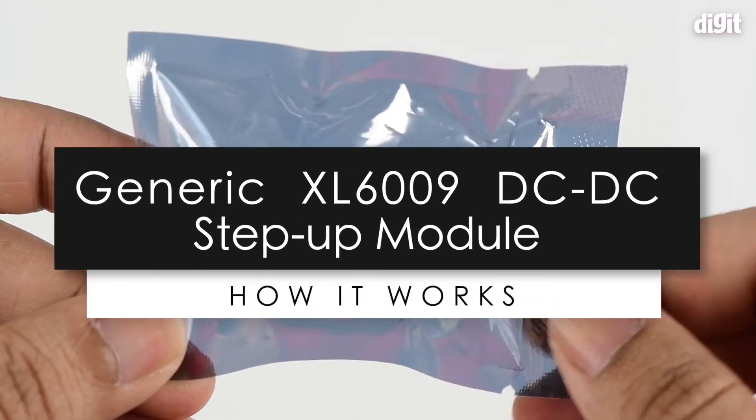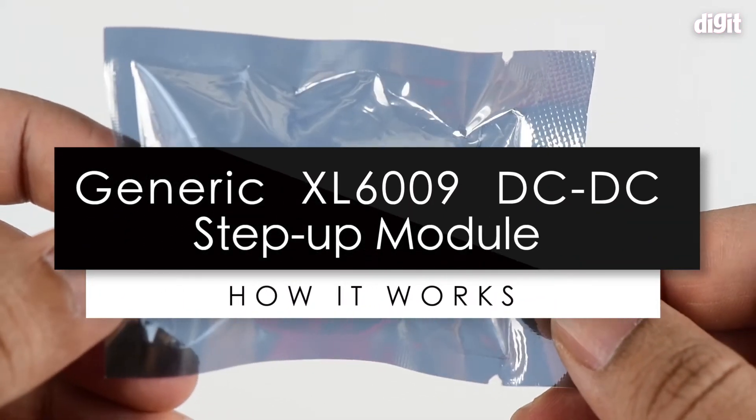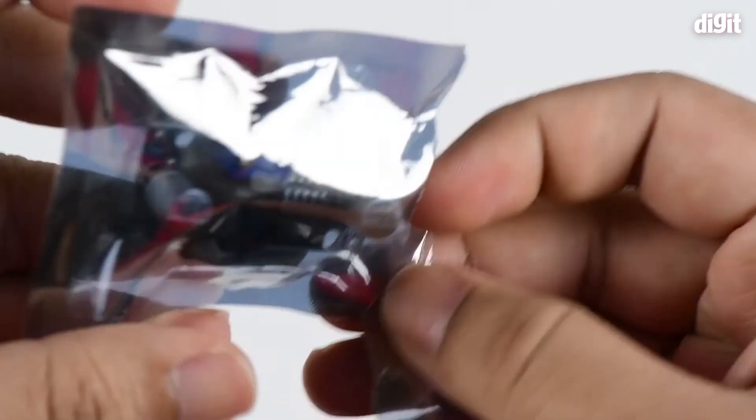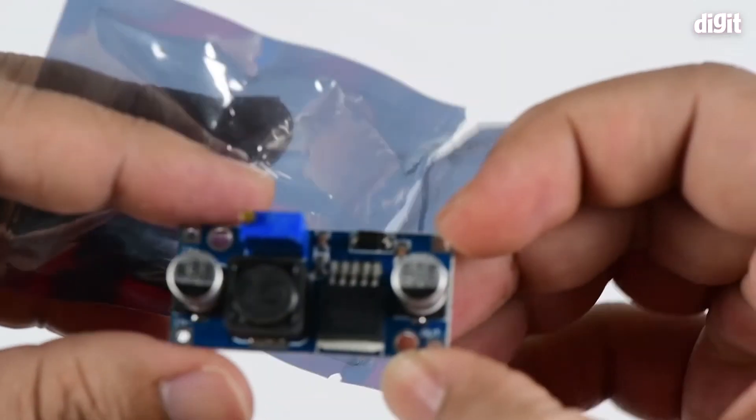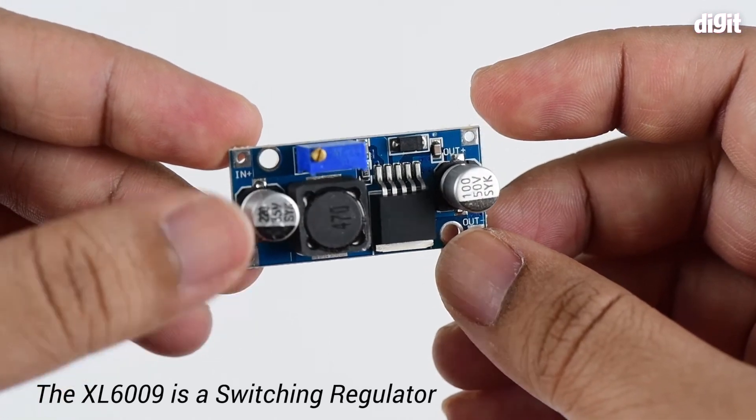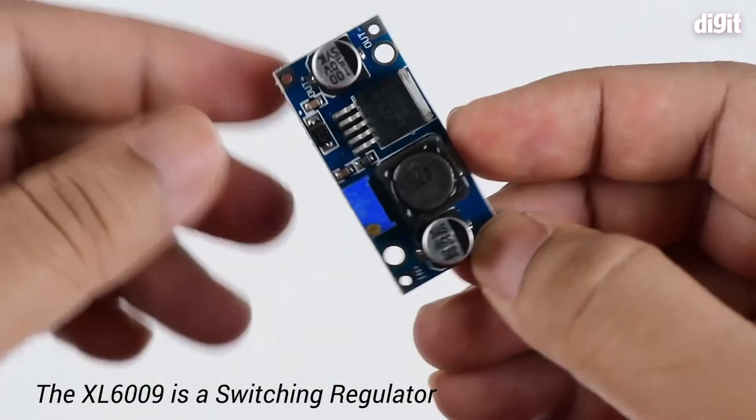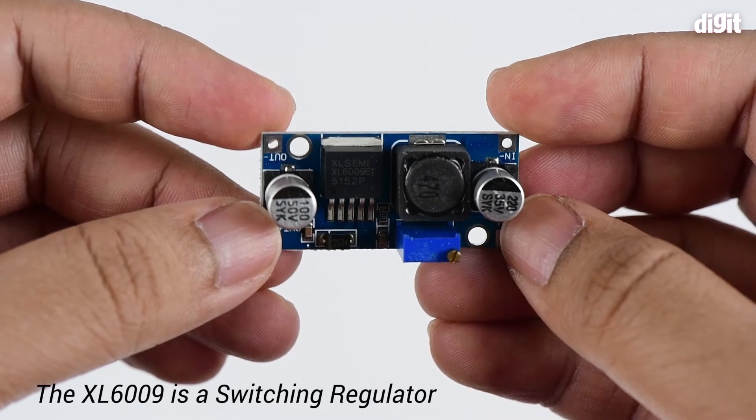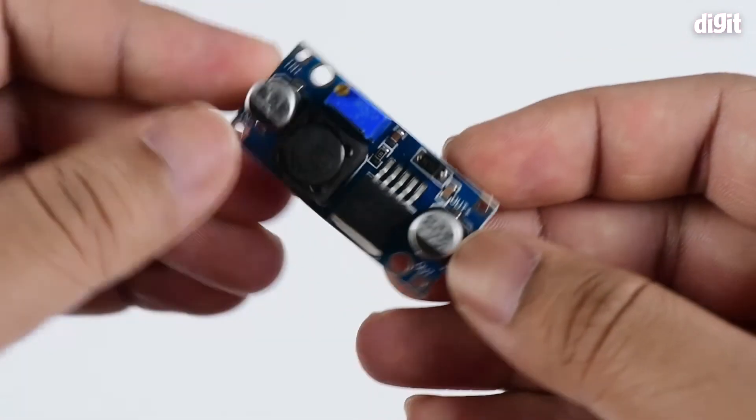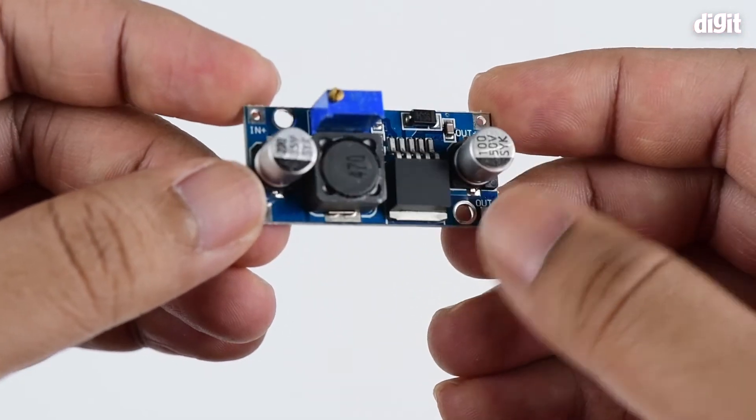Hey guys, welcome to Digit. In this video we're going to be looking at a rather popular DC to DC buck boost voltage regulator module based on the XL6009 regulator. This is a switching regulator, which means it takes the voltage and switches it on and off very frequently, and then filters the output so you have a linear voltage on the output.